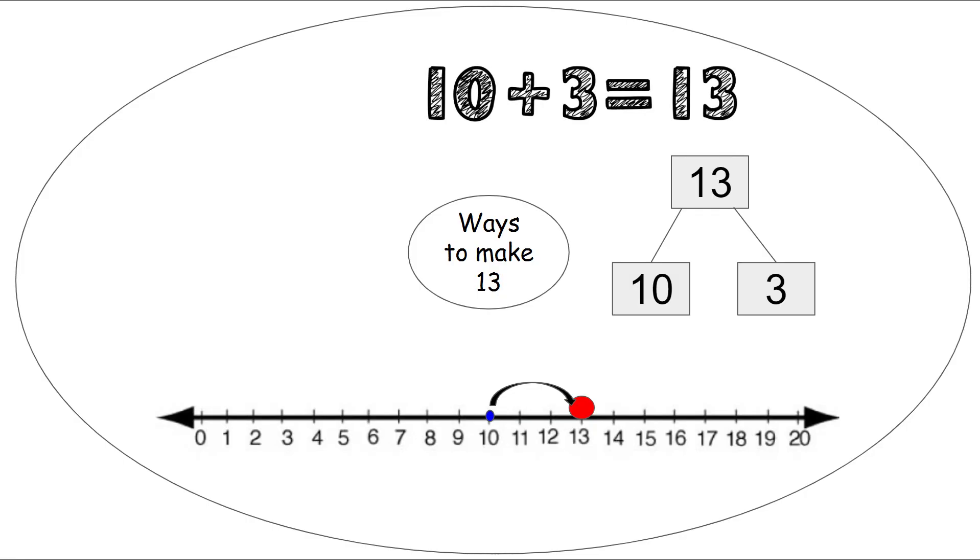We can use our number sentence. 10 plus 3 equals 13. We can use our rekenrek. We move 10 over on the top and then 3 on the bottom to make 13. 10 and 3 more make 13.